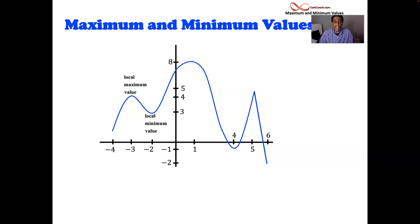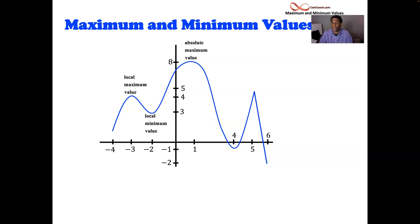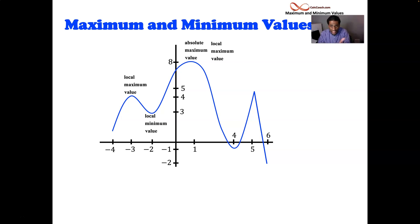At x equals negative 2, we have a local minimum value, and that value is y equals 3. Next we'll move to x equals 4 — we have another local minimum value at negative 1. And then what's happening at x equals 5 is kind of strange. The function is smooth up into that particular point, and we have this sharp point at 5. That's okay — it's still a peak, so it's a local maximum value.